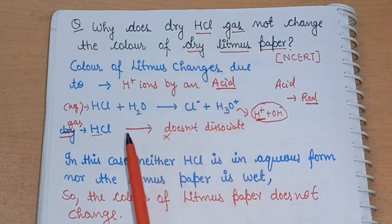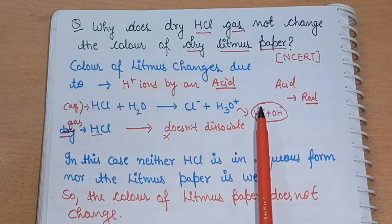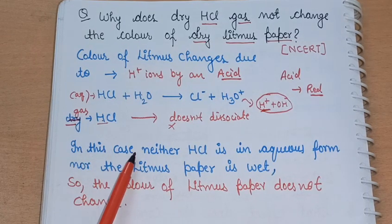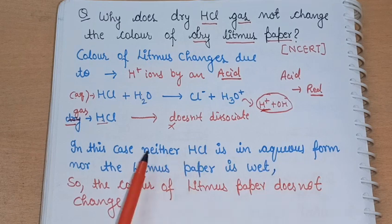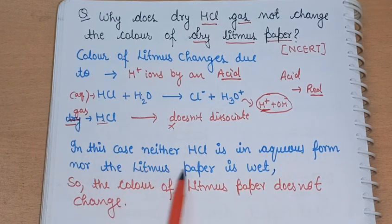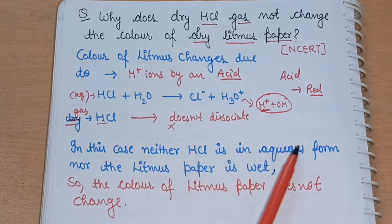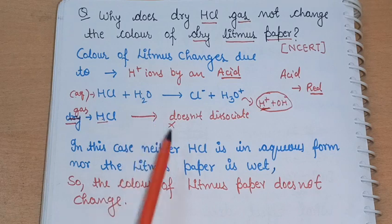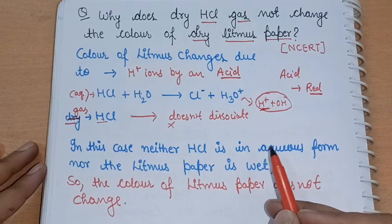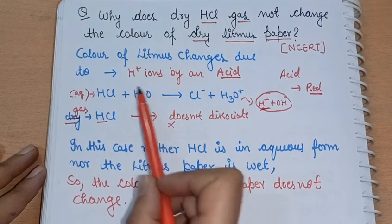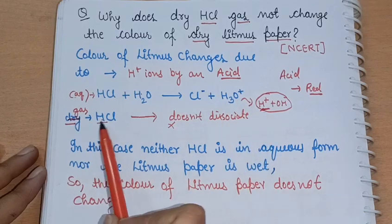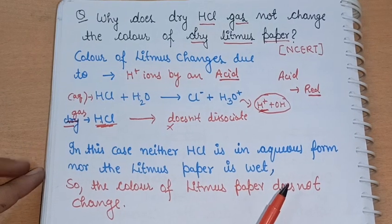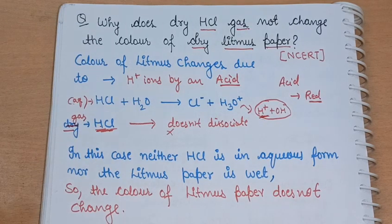The two conditions are such that you don't get H⁺ in dissociated or free form, which means the color doesn't change. Neither is HCl in aqueous form, nor is the litmus paper wet. The color of the litmus paper does not change because we don't get free H⁺ ions. Remember: acids dissociate in aqueous solution — when they are in water. In gaseous form, they do not dissociate, which is why they don't change the litmus paper color. Thank you so much!